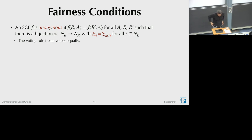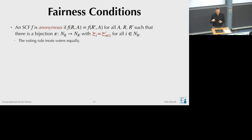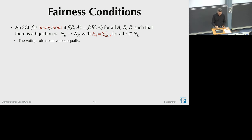Now we introduce fairness conditions—also called symmetry conditions—for social choice functions. These only make sense in the social choice context. The first property is called anonymity. The idea is that for many applications, a social choice function should not depend on the identities of the voters; it should be symmetric with respect to voter identities.